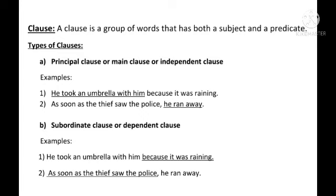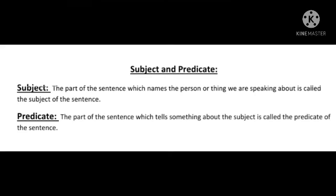Now let's see another example: 'As soon as the thief saw the police, he ran away.' In this sentence, we can see two parts. 'As soon as the thief saw the police' is the subordinate clause, and 'he ran away' is the principal clause, because 'he ran away' gives us a complete sense. But if we say 'as soon as the thief saw the police,' it sounds like we require more information. And that is why this clause is the dependent or subordinate clause.